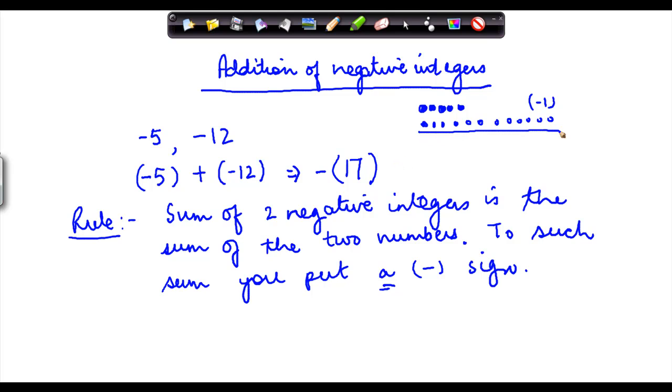Now, if you were to do this, again, this represents minus one. If you have to add all these beads together, the sum of these beads will be how many? 17, right? But because each bead represents minus one, so this will be 17 times minus one or minus 17.